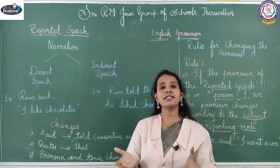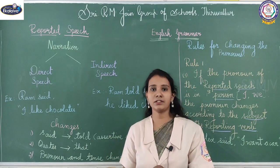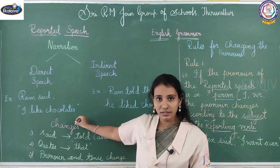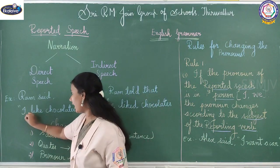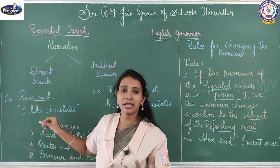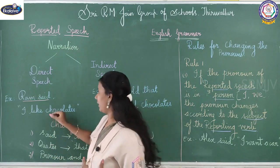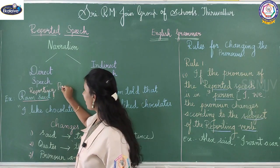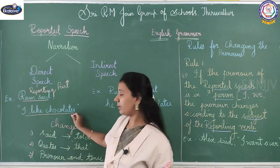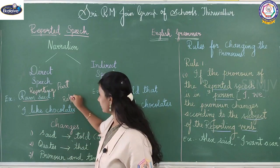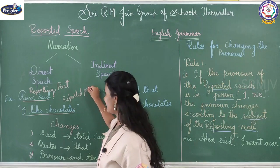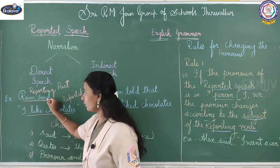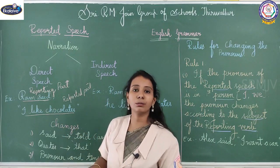Before understanding how to convert direct speech into indirect speech, we must understand all the terms of a sentence. Ram said, 'I like chocolates.' The part 'Ram said' — who said to whom — will form the reporting part of the sentence. This is called the reporting part. The verb 'said' occurring in the reporting part is called the reporting verb.